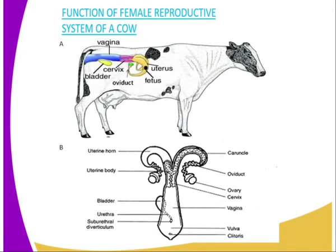The female reproductive system of a cow is made up of several parts. First, we have the ovary, which is responsible for production of the ovum. Then we have the oviduct, which is where fertilization takes place. Then we have the uterus — visible on the cow diagram — where implantation of the zygote occurs, and development of the zygote into an embryo, and then the embryo into the foetus.